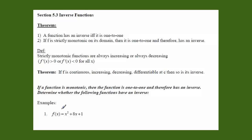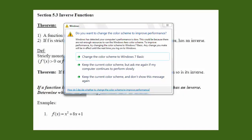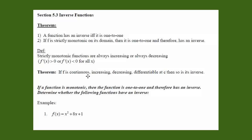Theorem two says: if f is strictly monotonic on its domain, then it is one-to-one and therefore has an inverse. Our definition for a monotonic function is that it is a function that is always increasing or always decreasing. So that means on a particular interval, f prime will always be positive or f prime will always be negative, which implies the function is monotonic, one-to-one, and has an inverse.